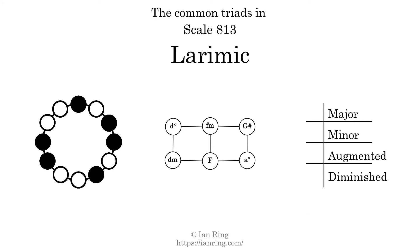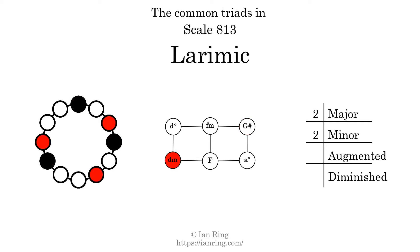Here are the common triads present in this scale. The diagram in the center is a graph of parsimonious voice leading between triads. There are 2 major triads, 2 minor triads, no augmented triads, and 2 diminished triads.